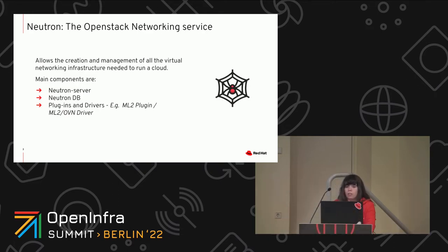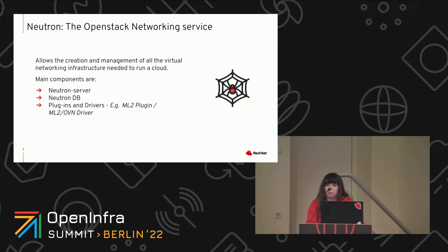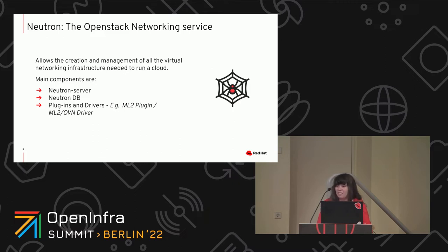Neutron is the OpenStack networking service. In OpenStack there are many different services that allow for many different capabilities in the cloud. Some of them are optional and some of them are core. Neutron is one of those core components because it allows for all the wiring of the instances we want to deploy, either VMs or bare metal, and it also wires the services between themselves.